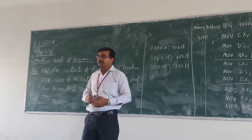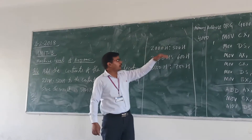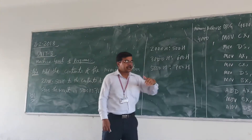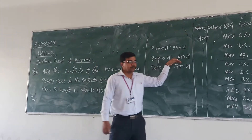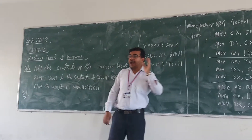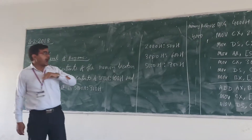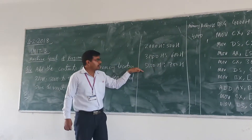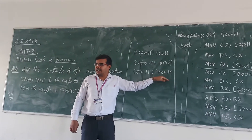The first data is available in segment 2000h at memory location 500h. The second data is in segment 3000h at memory location 600h. We need to store the result — the addition of these two data values — at segment 5000h and memory address 700h.